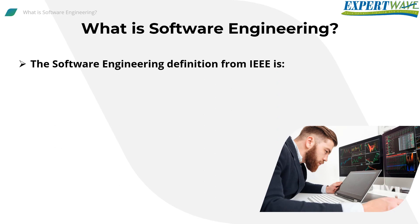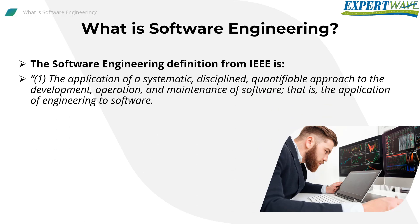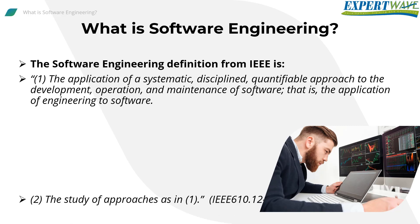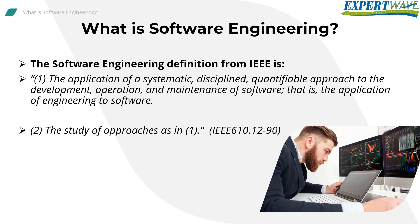The software engineering definition from IEEE is: software engineering — one, the application of a systematic, disciplined, quantifiable approach to the development, operation, and maintenance of software; that is, the application of engineering to software. Two, the study of approaches as in IEEE 610.12-90.